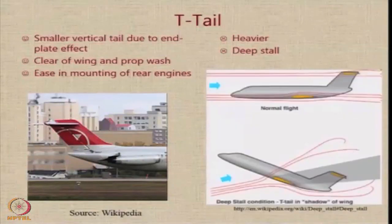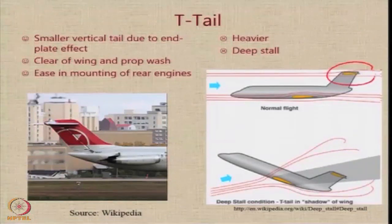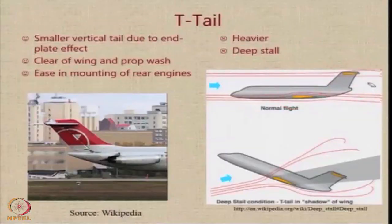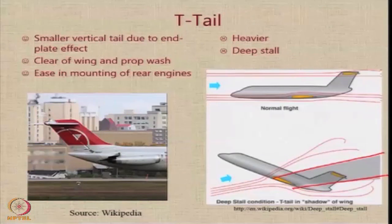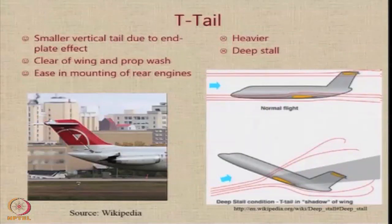At higher angles of attack, the wing wake is actually much larger, and in a T-tail configuration the tail is completely submerged in that wake. In a normal configuration, the tail is away from the wash of the wing — that is good. But when you have a very high angle of attack, the wake of the wing is quite large, and unfortunately the surface helpful in overcoming this situation — the tail — is completely submerged. This phenomenon is called the deep stall condition. T-tails suffer from the deep stall problem.